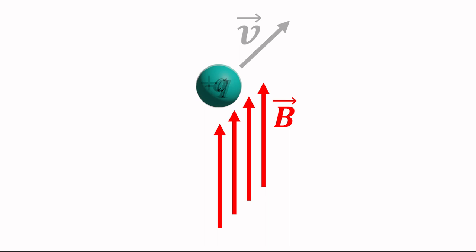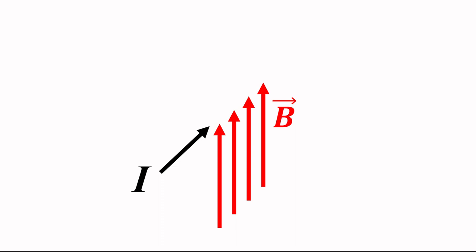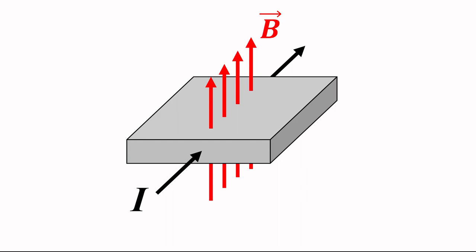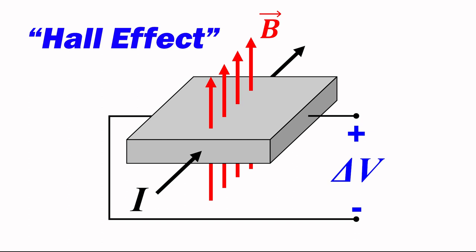This force will move positive charges to the right in the view shown, and negative charges will move to the left. Moving charge is the very definition of current, and if we flow a current in the direction shown through a conducting material placed in this magnetic field, the positive charges will accumulate on the right side and the negative charges on the left side. This creates a potential difference across the material that can be measured and directly correlated to the magnetic field that caused it. This is known as the Hall effect, and it is used in a wide variety of sensing applications, including current probes, which we will discuss shortly.